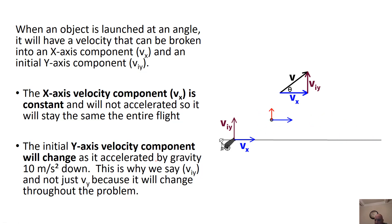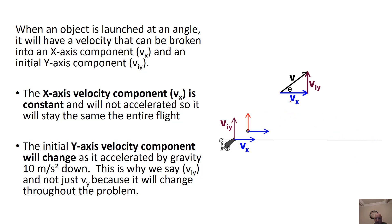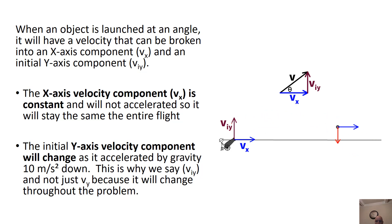When you have a projectile launched, you have an initial Y component and an X component. The X component — if you look at the blue arrow — doesn't change throughout. So if I know VX at one place, it's going to be the same VX the whole time. The Y component changes throughout because it's accelerated by gravity downwards. At the top there's no Y velocity, and at the bottom it's the opposite of what it was initially upward — and that's at the same height.